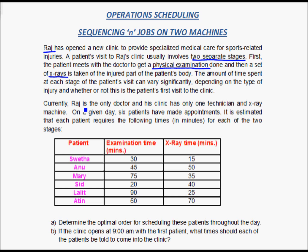Currently Raj is the only doctor, and his clinic has only one technician and one x-ray machine. On a given day, six patients have made appointments. It is estimated that each patient requires the following times in minutes for each of the two stages.